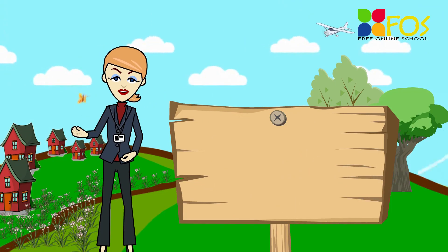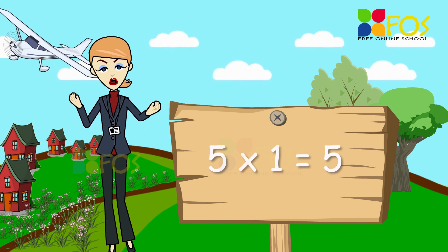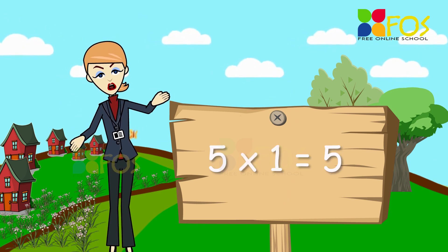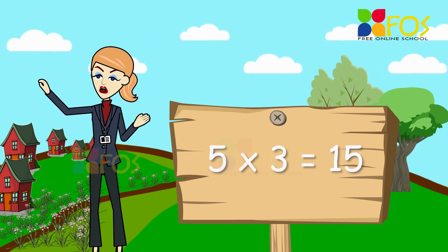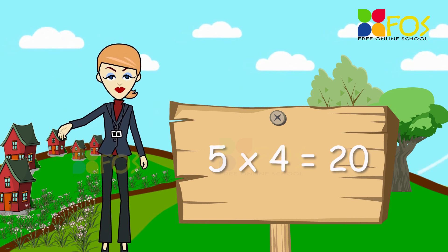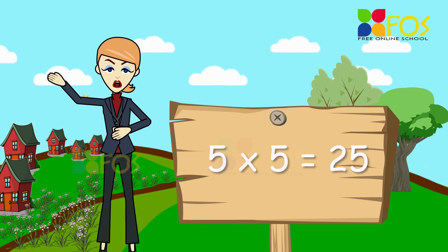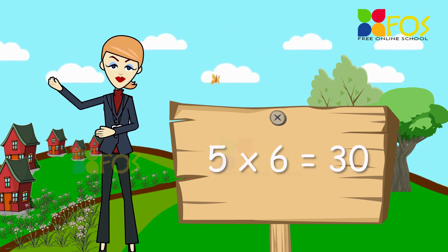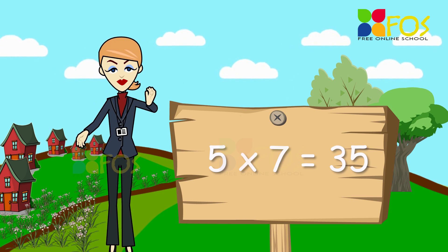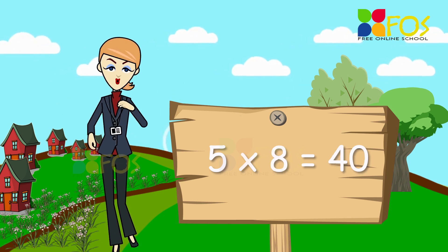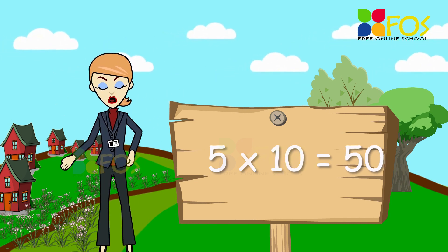Here is the table of five. Five ones are five. Five twos are ten. Five threes are fifteen. Five fours are twenty. Five fives are twenty-five. Five sixes are thirty. Five sevens are thirty-five. Five eights are forty. Five nines are forty-five. Five tens are fifty.